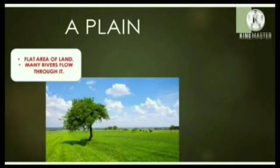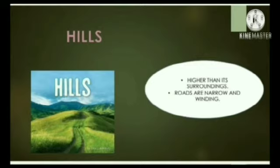Now let us talk about the different types of landforms present on the surface of Earth. First of all, we should know what landforms are. Landforms are natural, geographical or physical features on the Earth's surface. They consist of deserts, mountains, plains, coastal areas, islands, valleys, etc. Let us know these one by one.